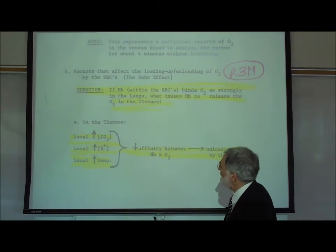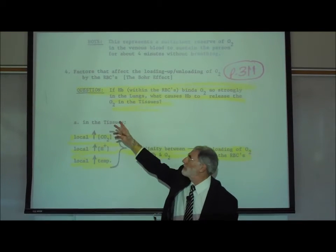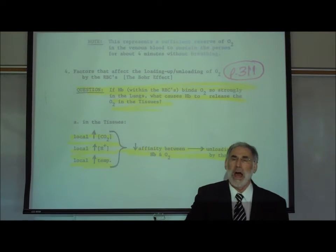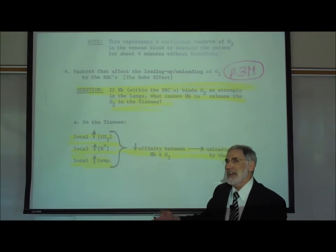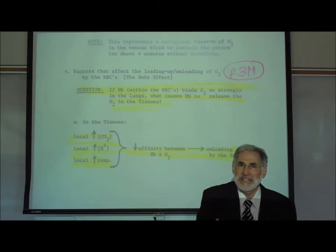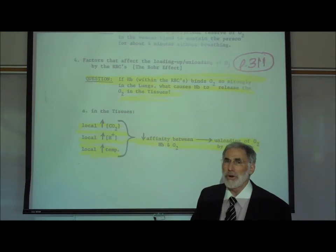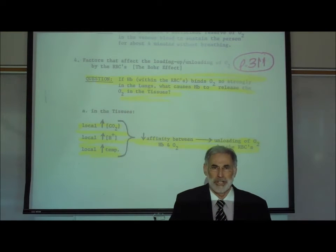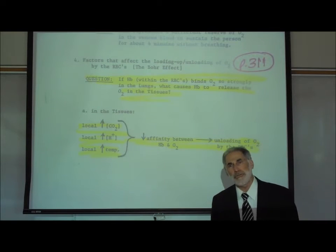This raises an interesting question. If the hemoglobin within the red blood cells binds oxygen so strongly in the lungs, then why would the hemoglobin release that oxygen so it can diffuse out of the red blood cell and be available to the tissues of the body? The answer is that there are a number of factors that actually cause the hemoglobin to release that oxygen — factors that decrease the affinity that hemoglobin has for oxygen.